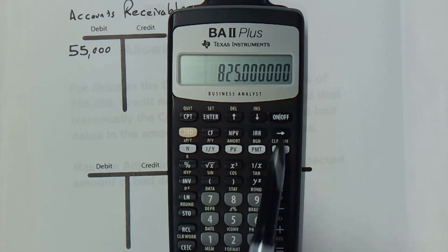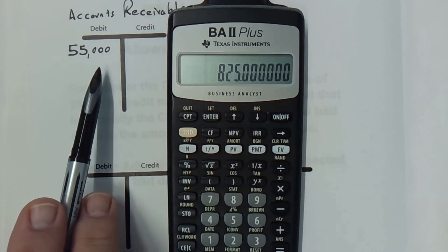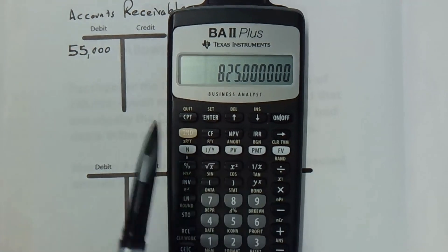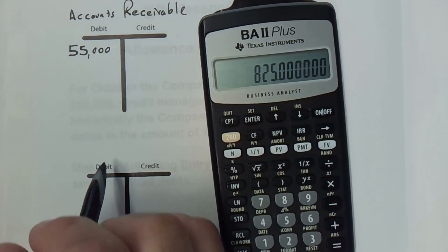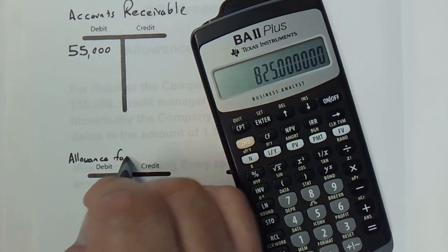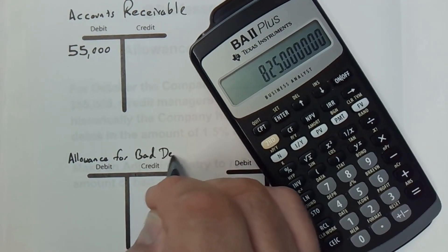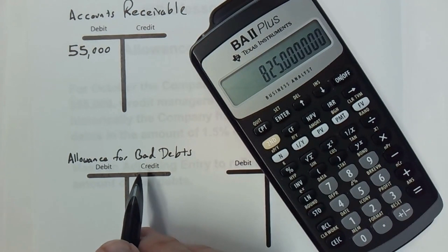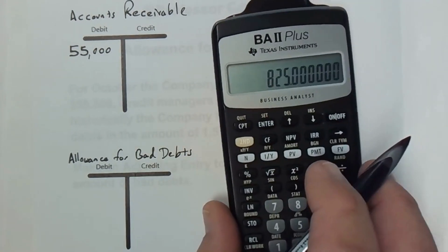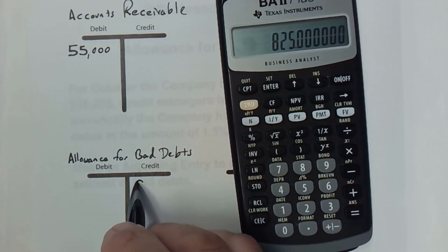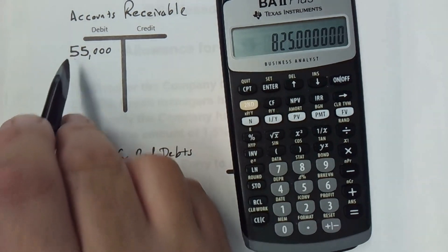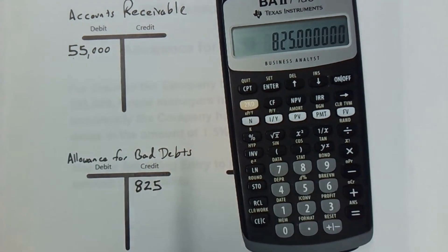We don't want to just subtract that from accounts receivable because that would mess up the proper accounting. So we use another account — a contra asset account called Allowance for Bad Debts. Just like any contra account, it offsets the account it's related to. In this case it offsets by $825, so we put a credit of $825 there, offsetting the $55,000 in accounts receivable.